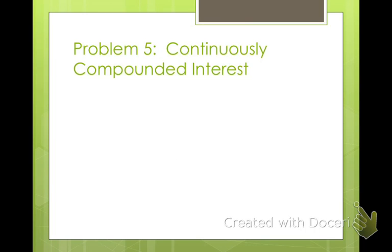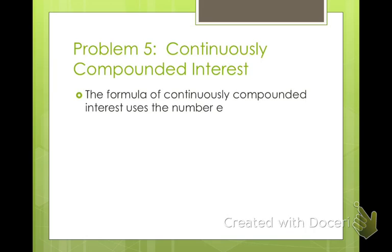And continuously compounded interest. We're going to take these things that we've learned and apply them to a problem. So the formula for continuously compounded interest uses the number e. So what it means to be continuously compounded is sometimes things are in banking. It's compounded annually or monthly or quarterly.